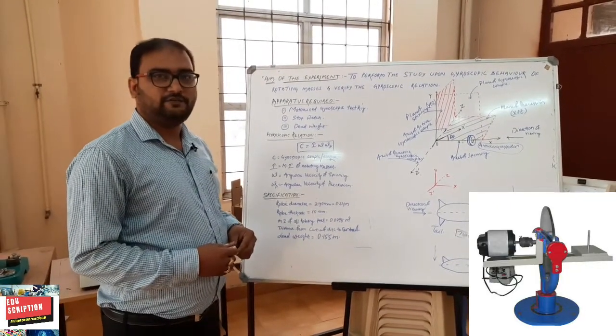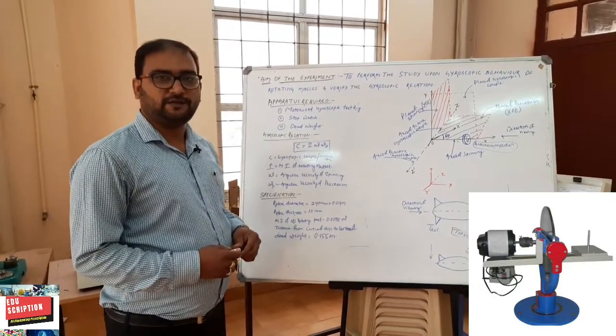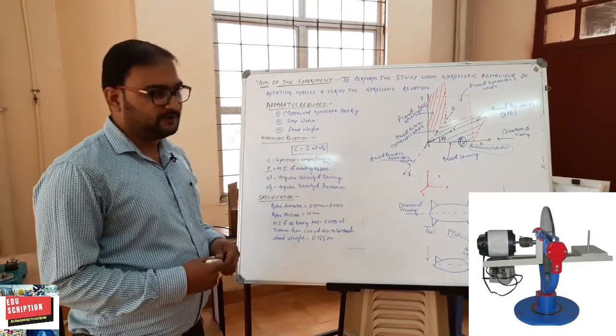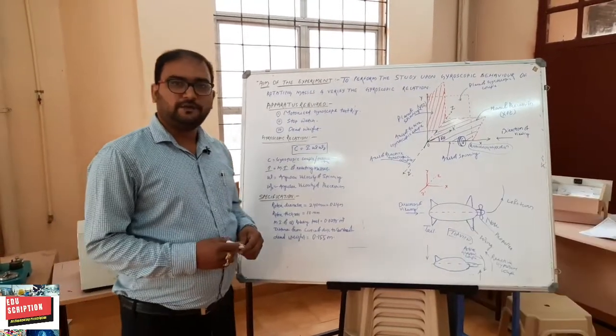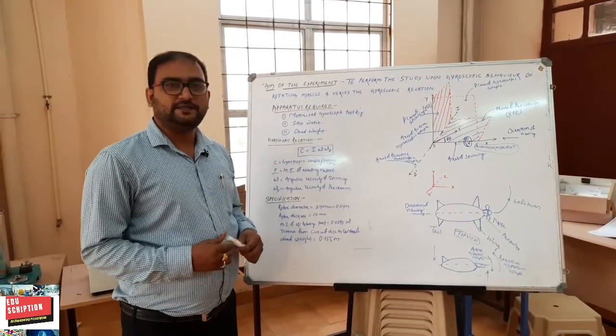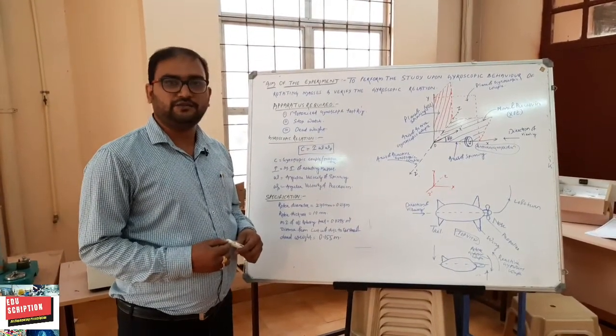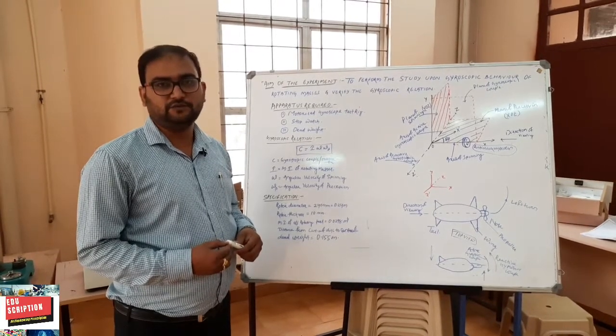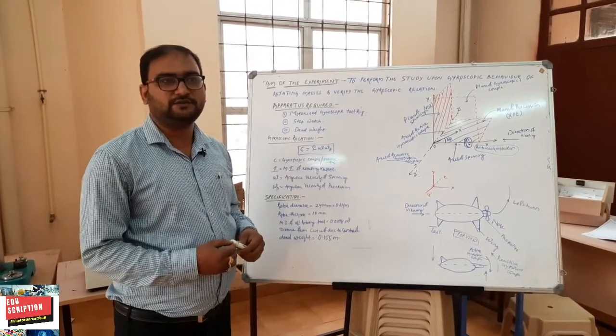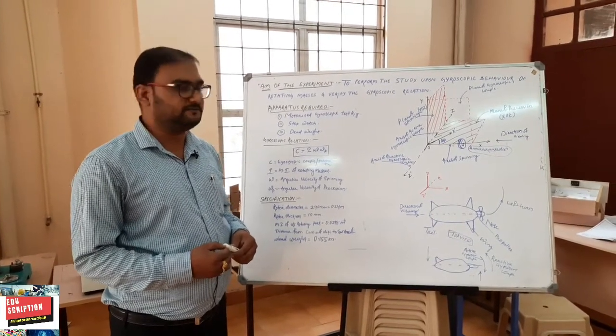What is gyroscopic couple? Gyroscopic couple means it is the reactive couple which opposes any changes of spinning motion or the spinning axis.